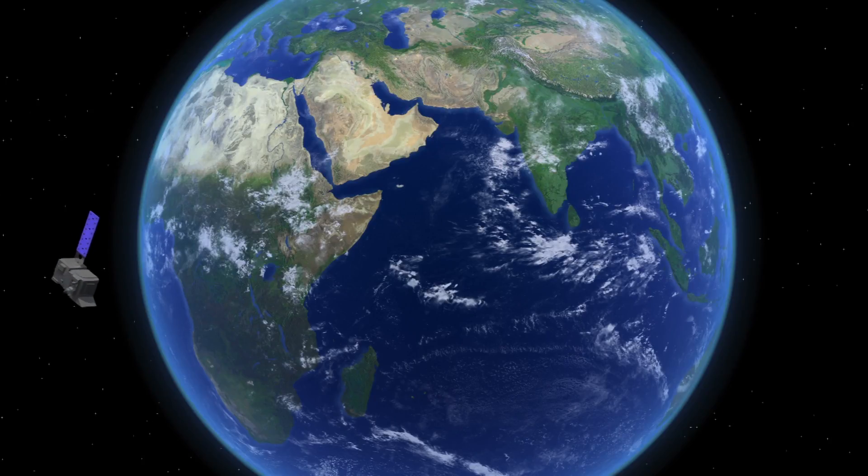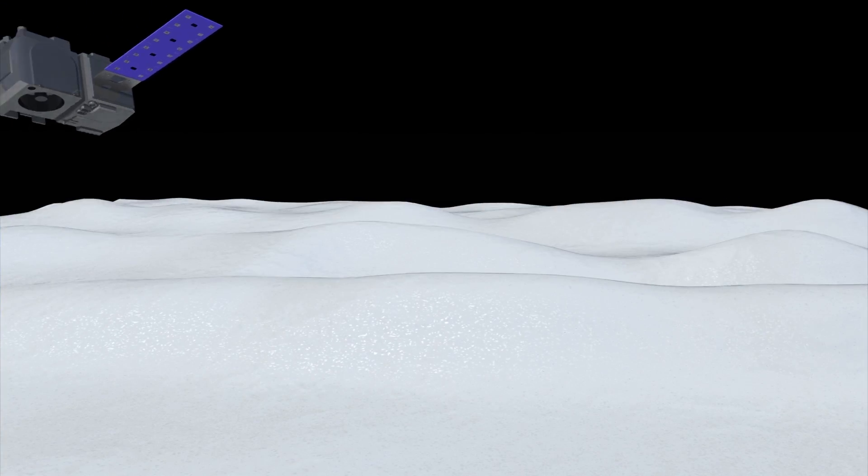NASA says ICESat-2 will get a more detailed view of the ice surface as it circles the Earth from pole to pole, measuring ice heights along the way four times a year.